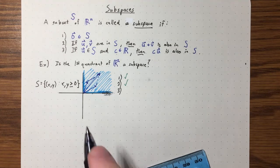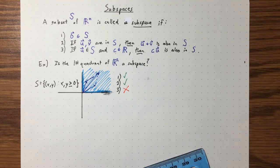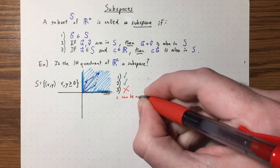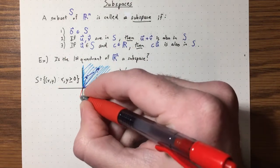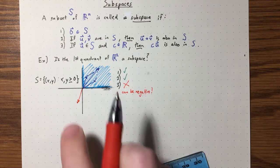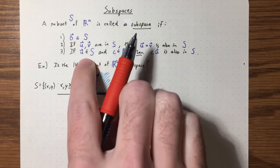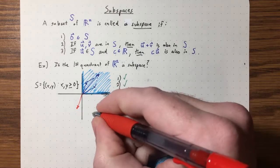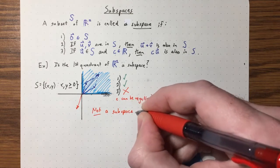How about condition 3? If I have a vector in my first quadrant and any scalar C in R, is C times U also going to be in S? The answer is no, because the scalar C can be negative. If I take a vector in the first quadrant and multiply it by negative one, I end up with a vector in the third quadrant — that's not in my subset. So this is not a subspace.